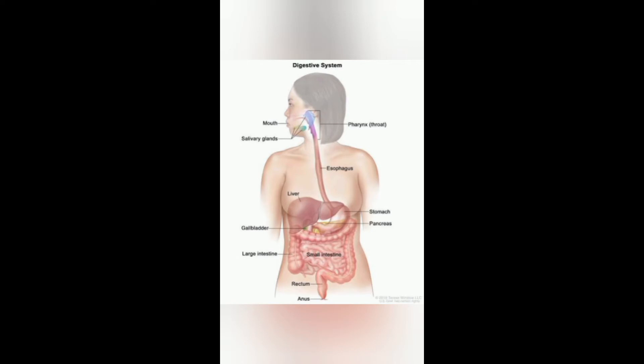Next we have the digestive system. The food we eat is broken down into smaller pieces and then absorbed by the body — this process is called digestion. This digested food is used by our body to produce energy. The organs that help in digestion form the digestive system: they are the teeth, food pipe, stomach, small intestine, and large intestine.